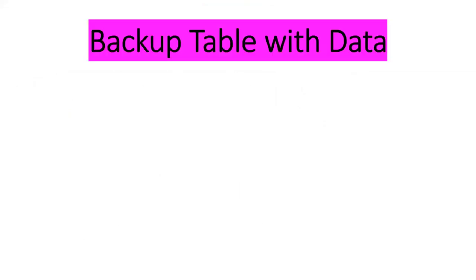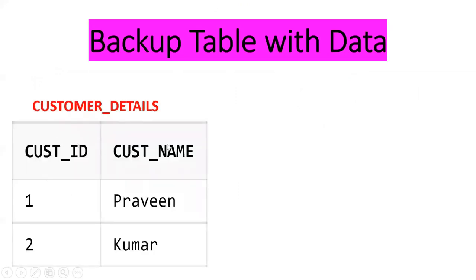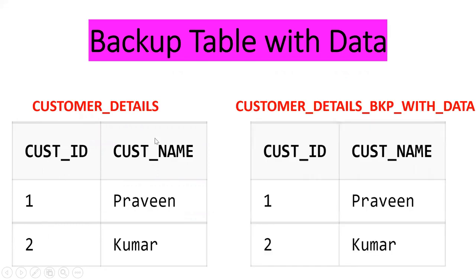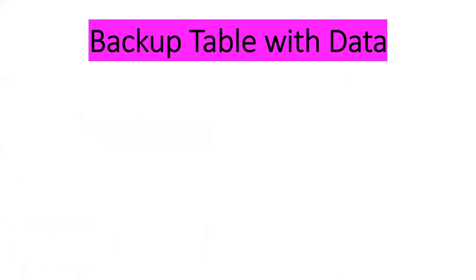Let us discuss. I want to create a backup table. This is my customer details table — it has two columns: customer ID and customer name, and two records: one Praveen, two Kumar. I want to create a table with the same definition and the same data — two columns and two values. The name of the new table is customer_details_backup_with_data. We can achieve this by using the CTAS concept.